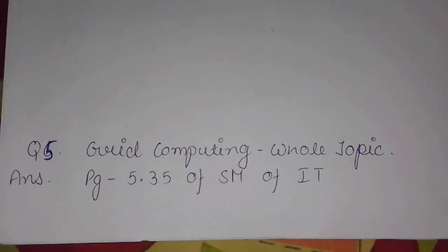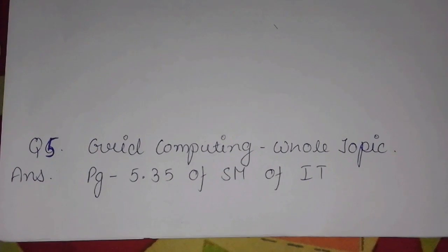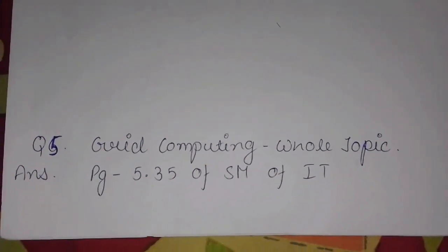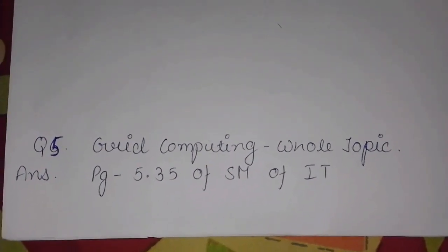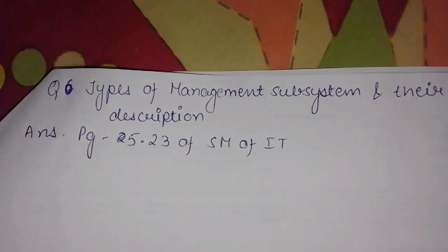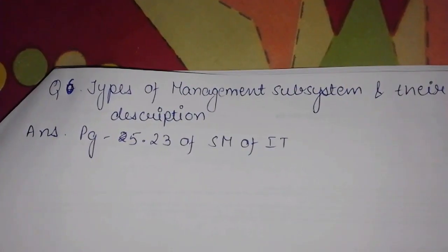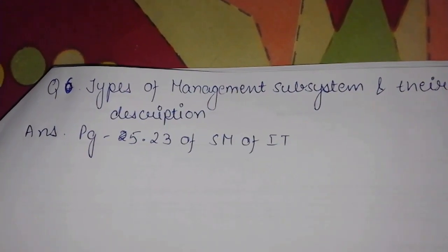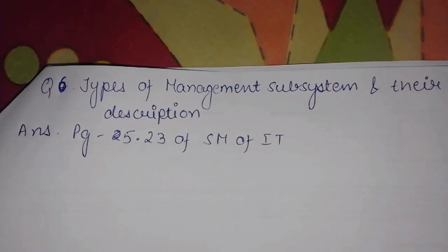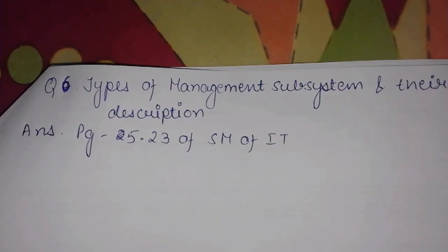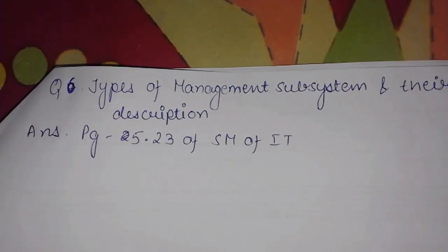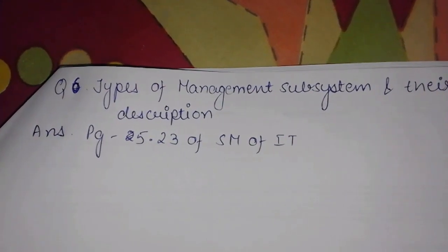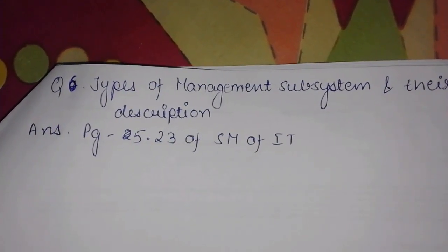Question 5 is Grid Computing — the whole topic is important. Its answer can be found on Page 5.35 of the Study Material of IT. Question 6, the last important question of Chapter 5, is Types of Management Subsystem and Their Description. Its answer can be found on Page 5.23 of the Study Material of IT.